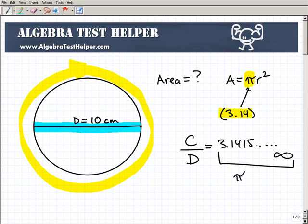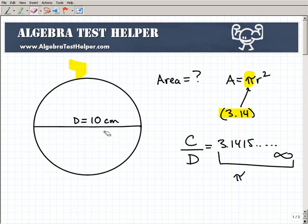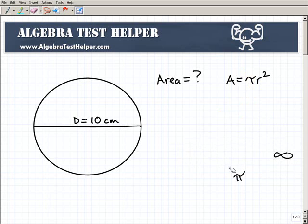That's where that number comes from. It's super important in mathematics, so you want to be familiar with the history of the number. Let's get back to our problem here. We have pi. Area of a circle equals pi r squared. Now r is the radius.